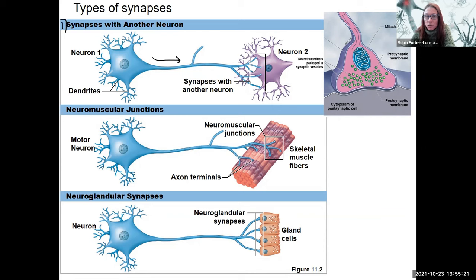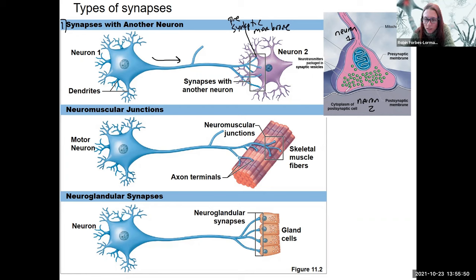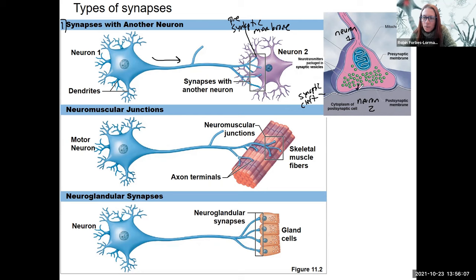We're going to see the presynaptic neuron — this is neuron one. Here is the presynaptic membrane, shown in blue right there. It is synapsing with a postsynaptic neuron, neuron number two, which has a postsynaptic membrane. In between is called a synaptic cleft, which is really important because that's where neurotransmitters will be released to transmit the signal to the next cell. They go into the synaptic cleft and bind to a receptor.